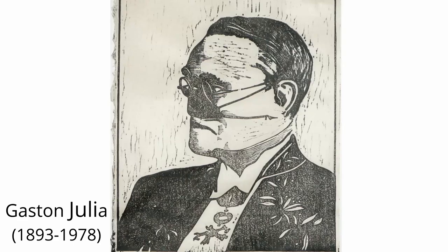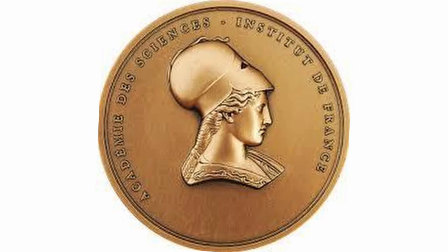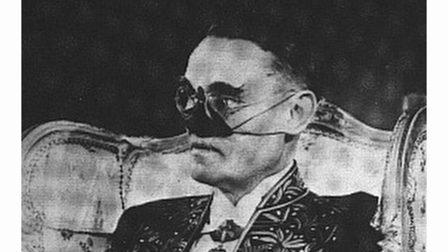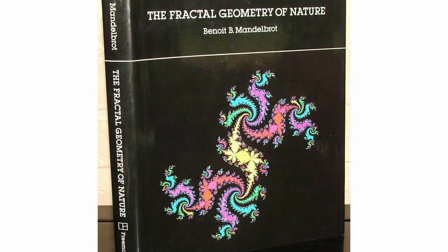Gaston Julia was a French mathematician born in 1893, who received the grand prize of France at the age of 25. Unfortunately, he had suffered an injury to his nose in World War I. By the time he died in 1978, the Julia set had been made famous by Benoit Mandelbrot in his pioneering study of fractal geometry.